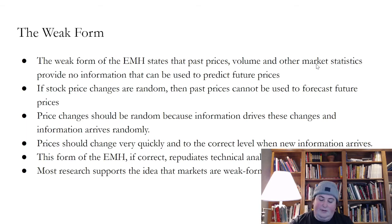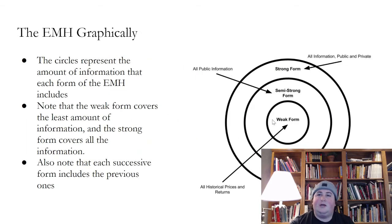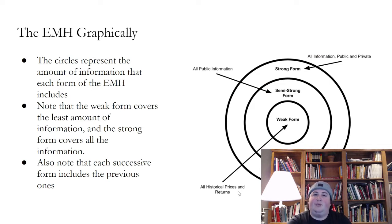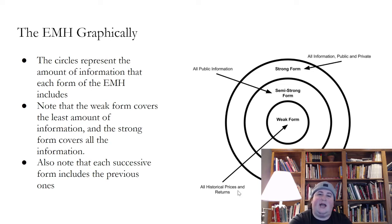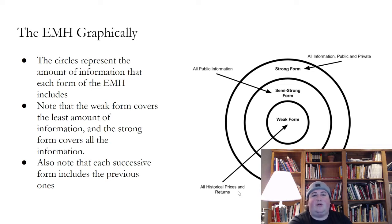Most research supports the idea that markets are weak form efficient. If we think about it and go back to the prior chart — do we think that the weak form holds? The answer is probably yes. Why would the weak form hold? What is the barrier to getting access to historical prices and returns? How hard is it to get historical prices and returns? You could get them, I could get them, and large sophisticated investors can get them. We can all get access to historical prices for stocks and returns.